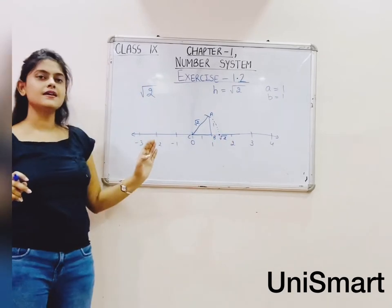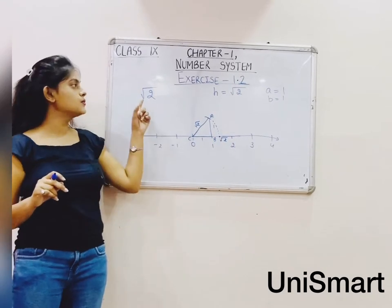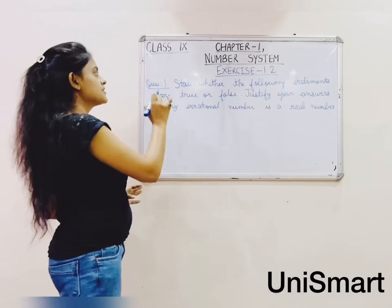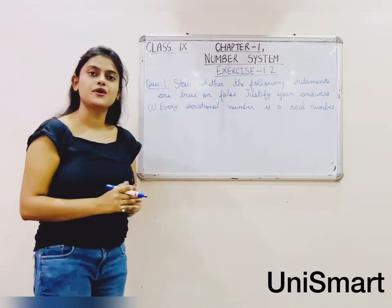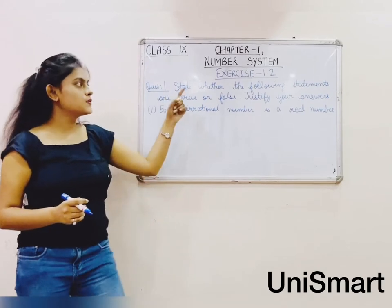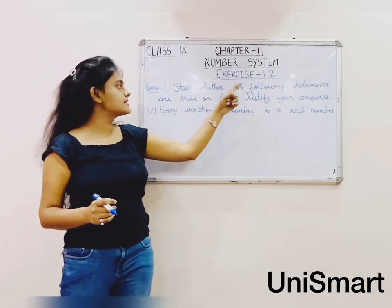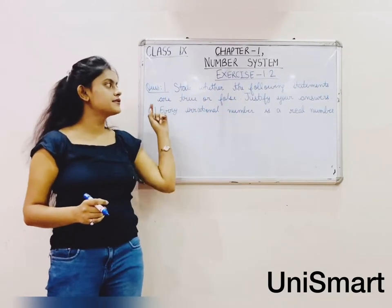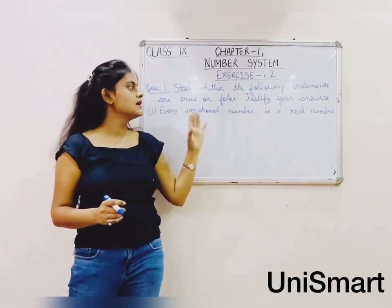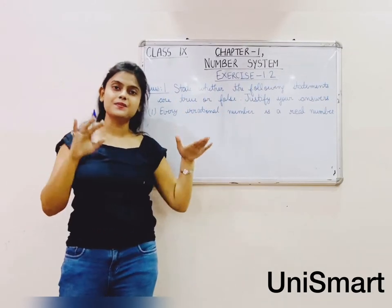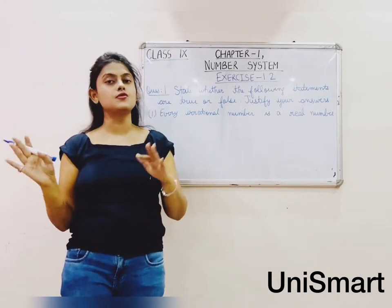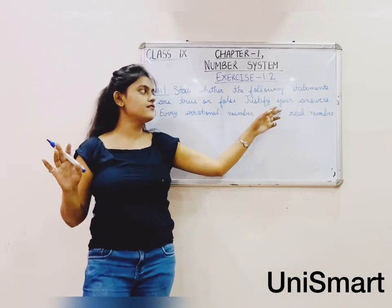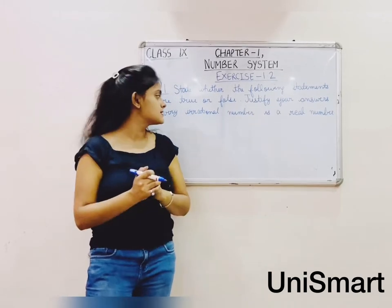So this point on the number line is our root 2. This is your number line of root 2. Moving forward to Question 1 of Exercise 1.2 — state whether the following statements are true or false and justify your answers.